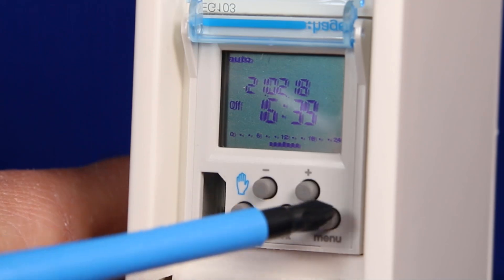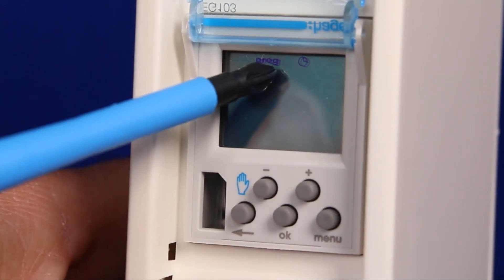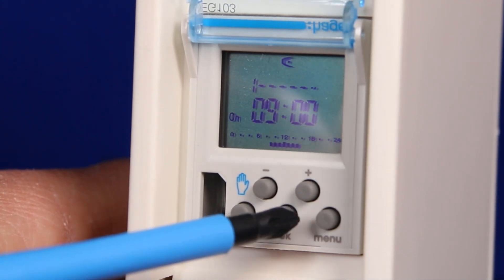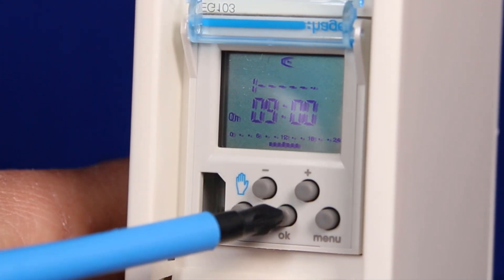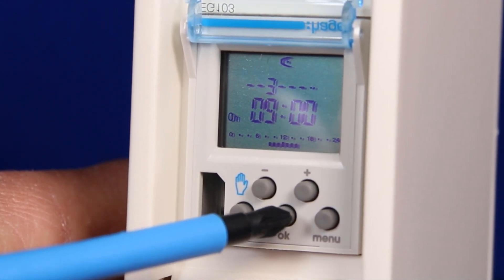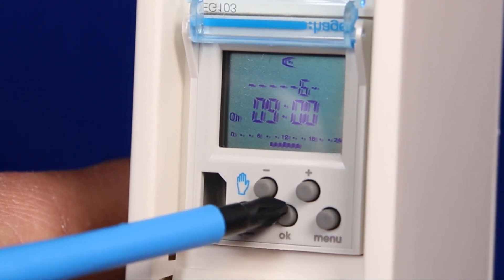Should we wish to check this we can select the menu but this time with the plus button select the viewing mode which is the symbol looking like an eye. Repeatedly pressing the ok scrolls through this program and you can see the on comes on at nine o'clock, the off at four o'clock, and scrolling through the whole program at the end returns to auto mode.